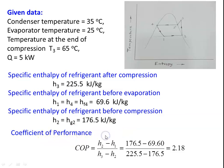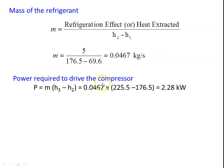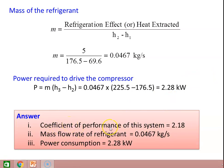The COP equation is H2 minus H1 divided by H3 minus H2. Substituting: 176.5 minus 69.6 divided by 225.5 minus 176.5, equal to 2.18. Mass of the refrigerant equals refrigeration effect divided by the enthalpy difference H2 minus H1 in the evaporator. The refrigeration effect is 5 kJ/s, so mass flow rate equals 0.0467 kg/s. Power required to drive the compressor P equals M into H3 minus H2, which is 0.0467 into 225.5 minus 176.5, equal to 2.28 kJ/s. Answers: COP is 2.18, mass flow rate is 0.0467 kg/s, and power consumption is 2.28 kilowatts.